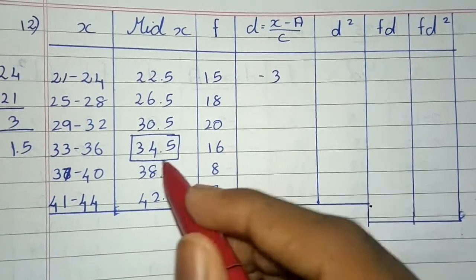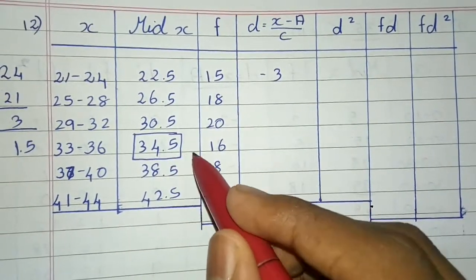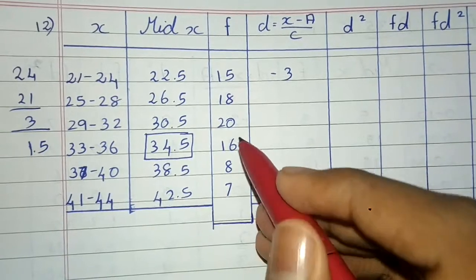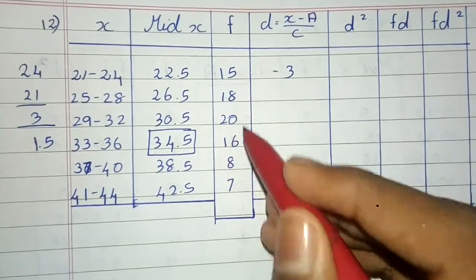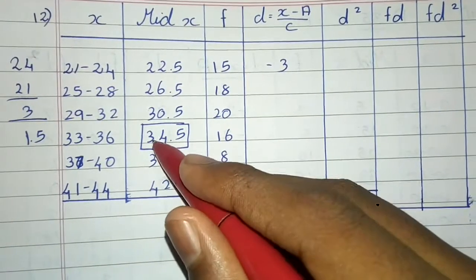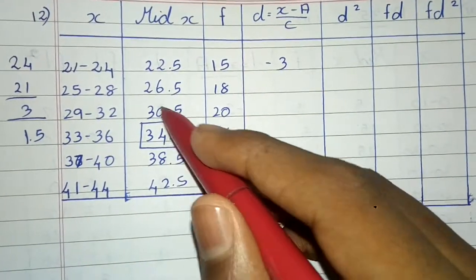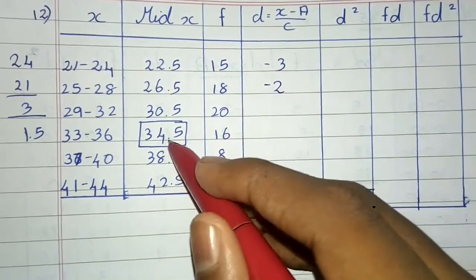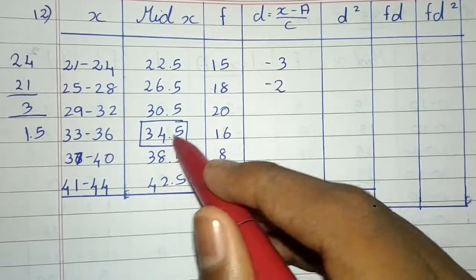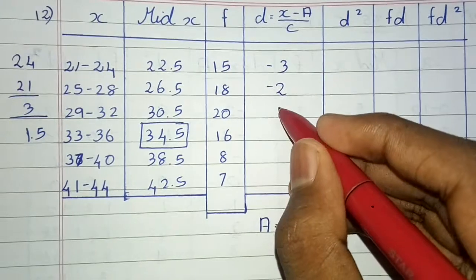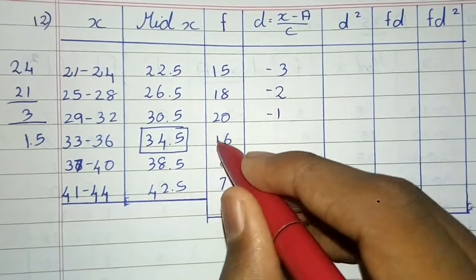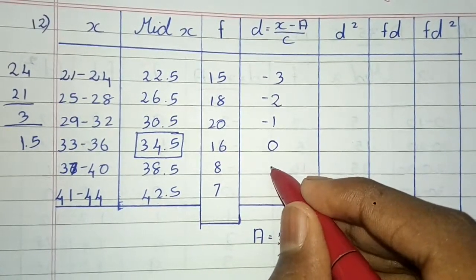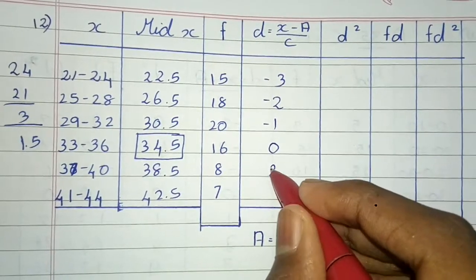We will find D, which is X minus E divided by C. Then C is equal to 4. We find that the value is 32.5, then 12 is equal to 12. So the answer is 3, then 8, it is 4 — 4 minus 4 divided by 4 is minus 1. 34.5 minus 34.5 is equal to 0. 38.5 minus 34.5 is equal to 4. 4 divided by 4 is equal to 1.